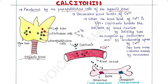The thyroid gland has two types of cells: follicular cells and parafollicular cells. Follicular cells release two hormones, T3 and T4, and parafollicular cells release calcitonin hormone.